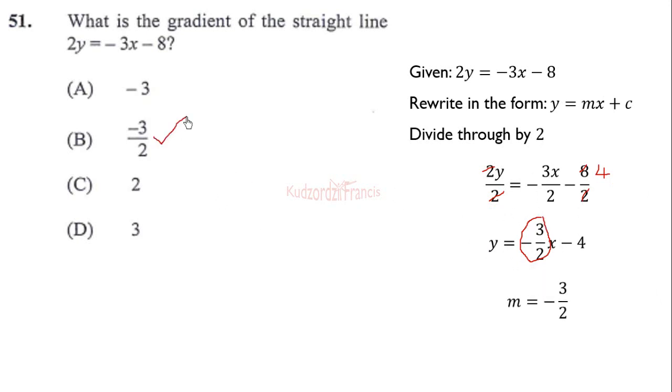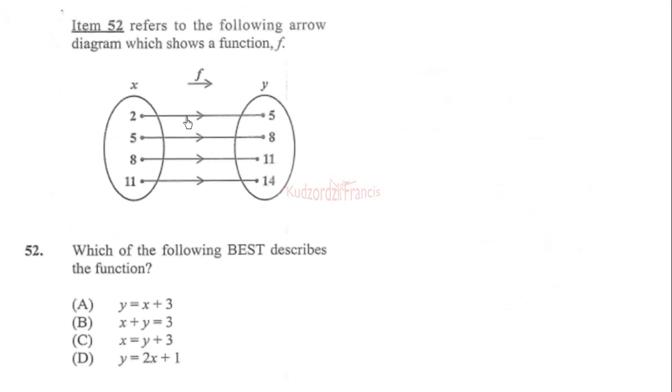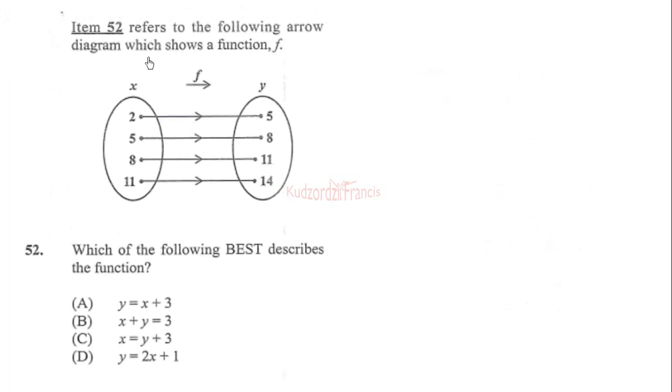Number 52 refers to the following arrow diagram which shows the function f. Which of the following best describes the function? We need to find an equation. You can pick values and plug them in to see whether all of them are satisfied, or you can derive the equation yourself.